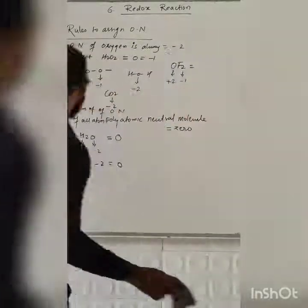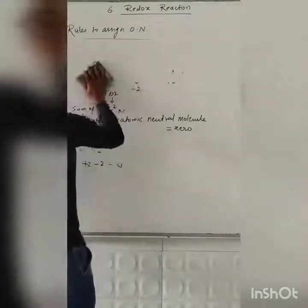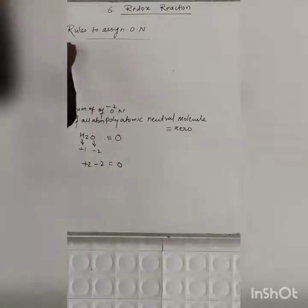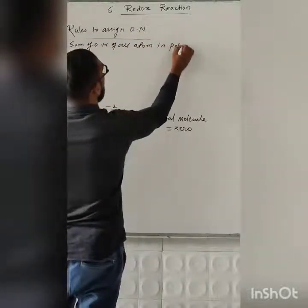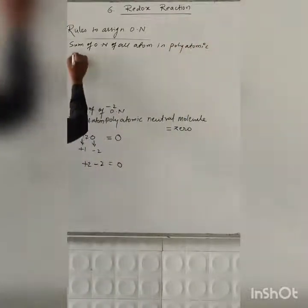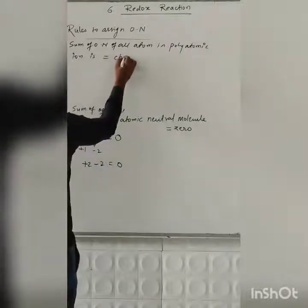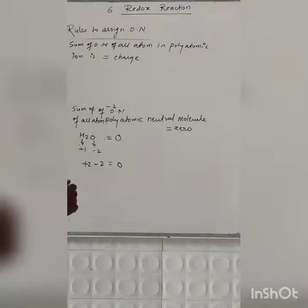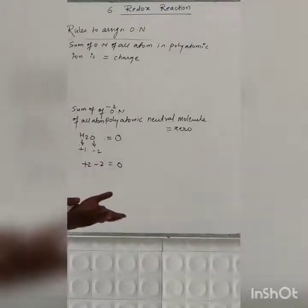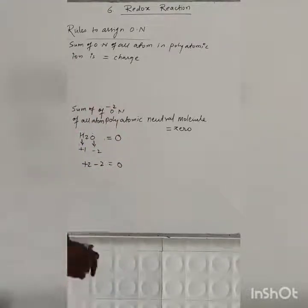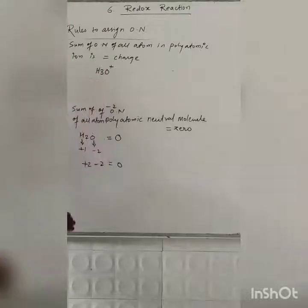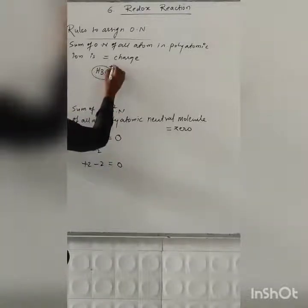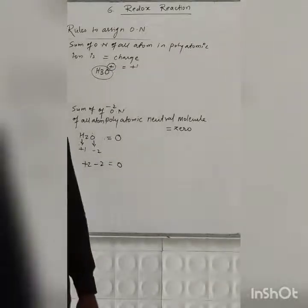Rule 6: the sum of oxidation numbers of all atoms in a polyatomic ion is equal to its charge. For example, H₃O⁺ — that is the hydronium ion — has a charge of plus 1. So the sum of oxidation numbers of all atoms in H₃O⁺ equals plus 1.